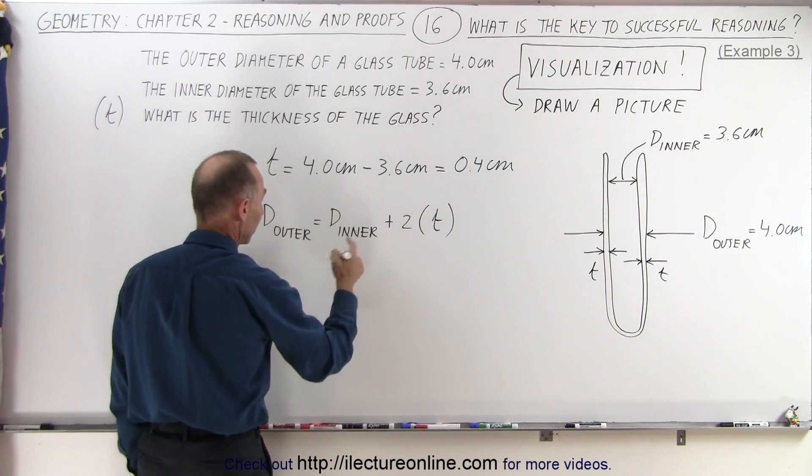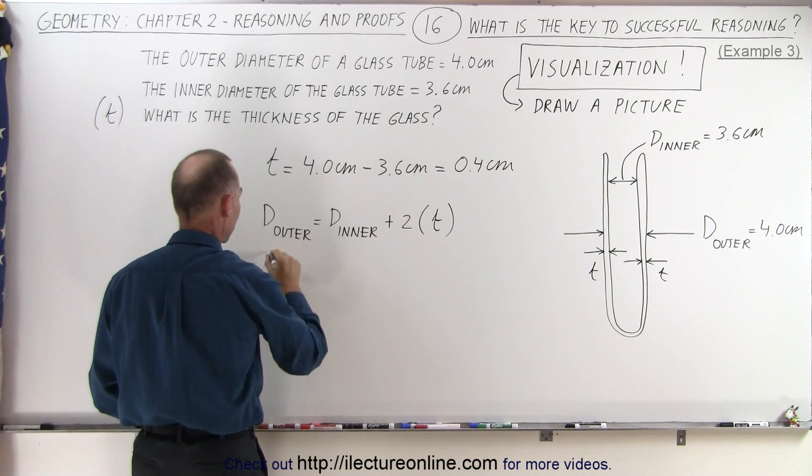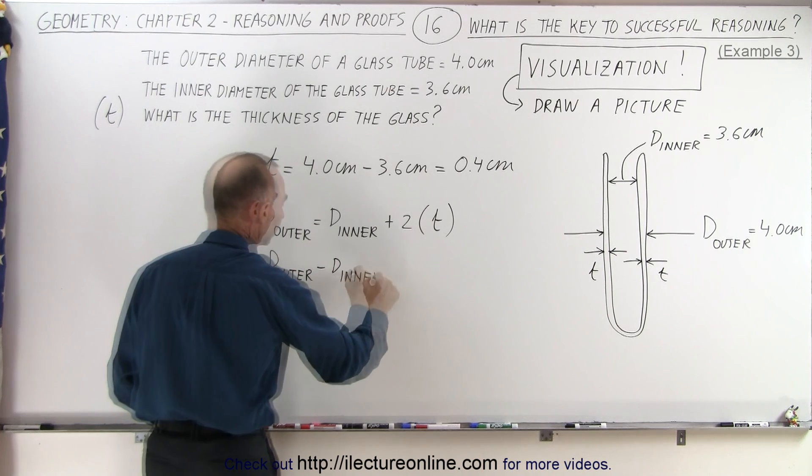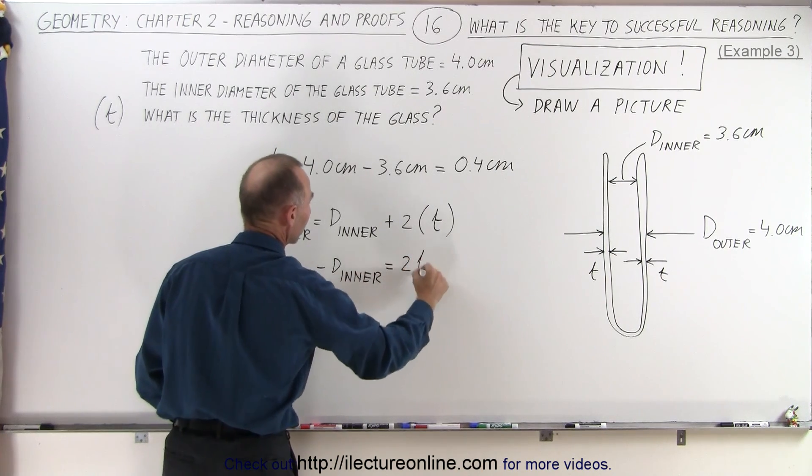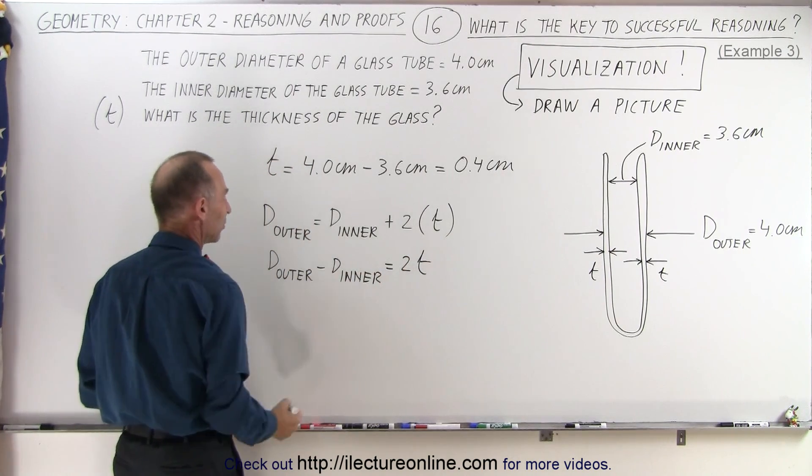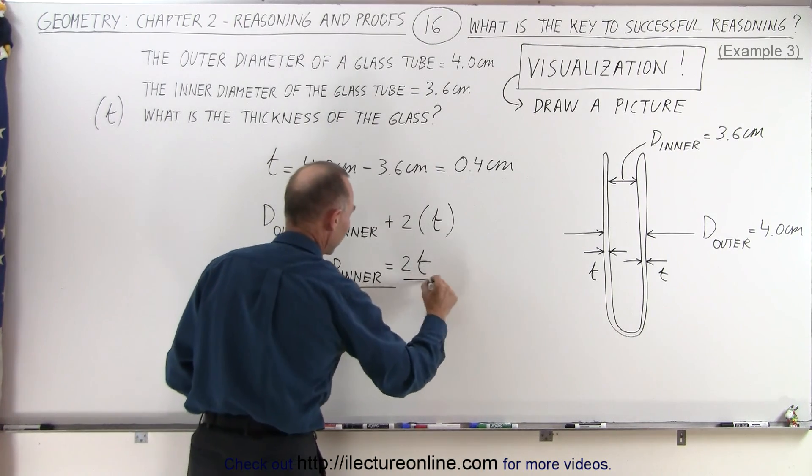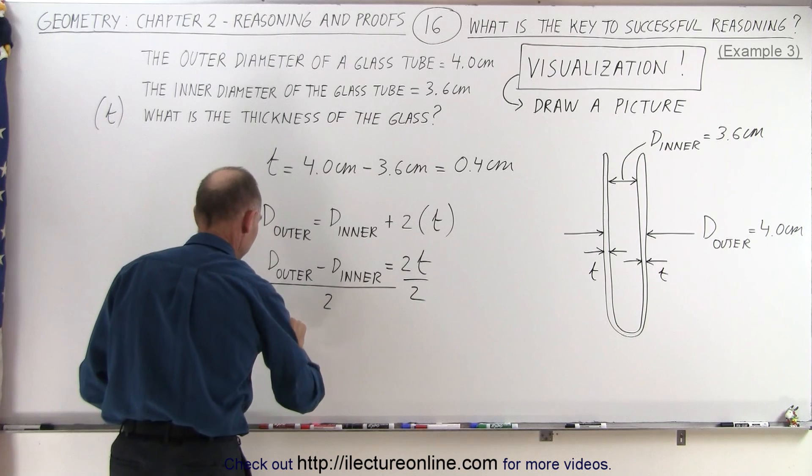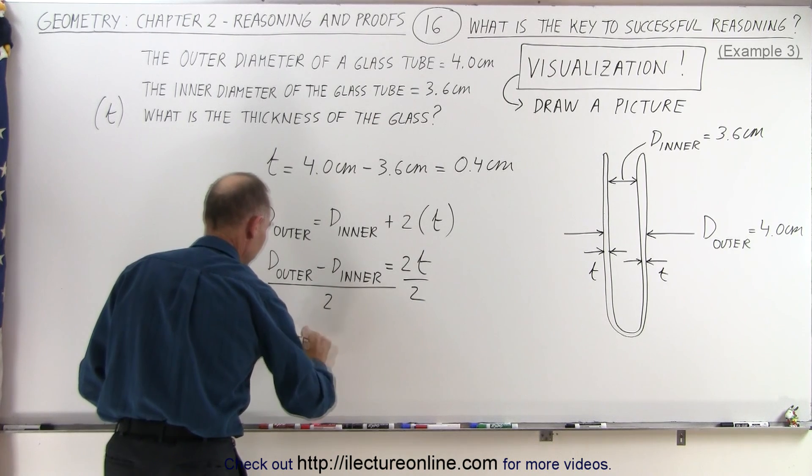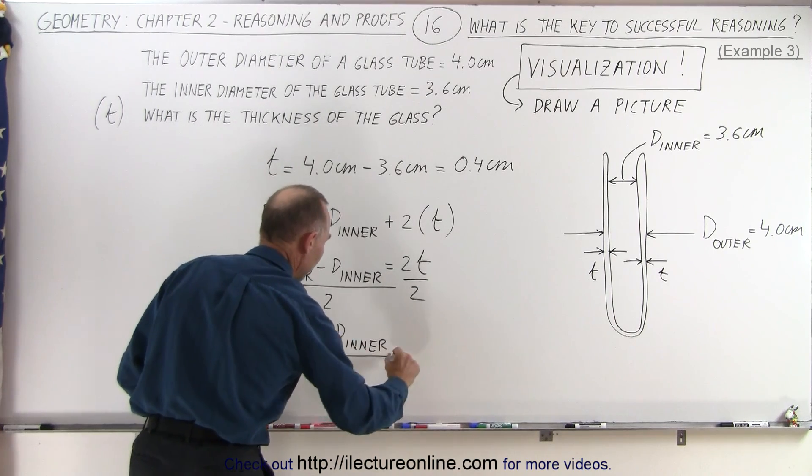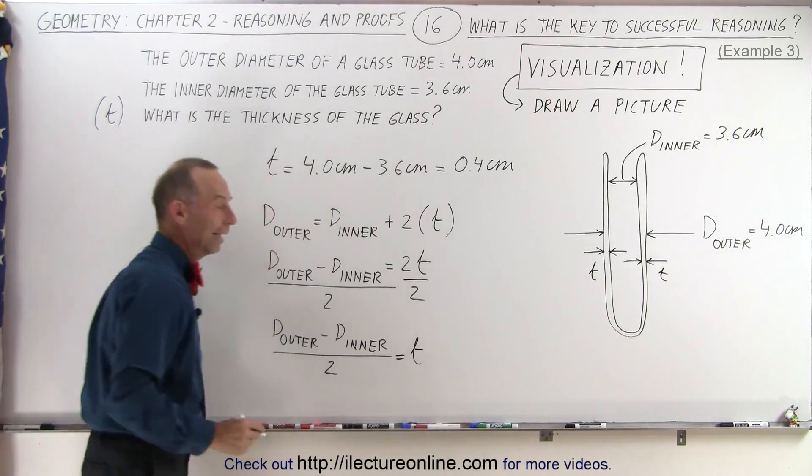Then we can say that if we bring the inner diameter to the left side, we have D outer minus D inner is equal to 2 times the thickness. And then, if we divide both sides by 2, we can see that we divide this by 2, and we divide this by 2, and finally, that the outer diameter minus the inner diameter divided by 2 is equal to the thickness of the glass.